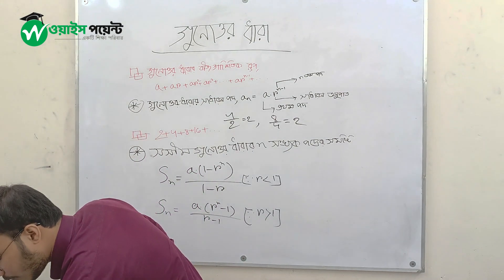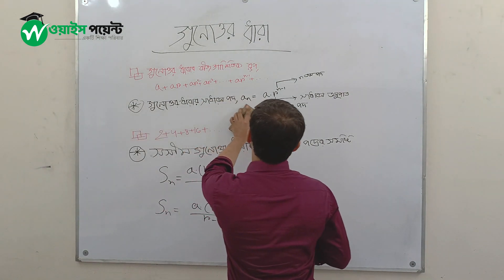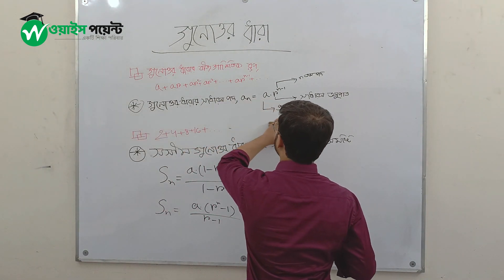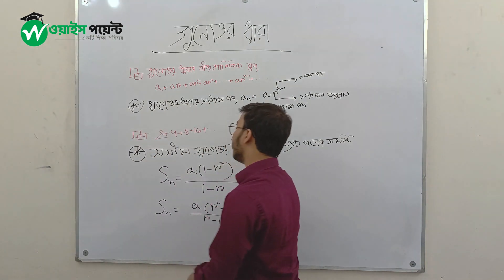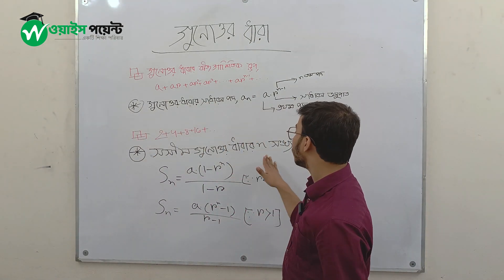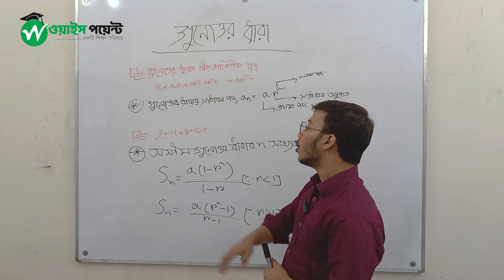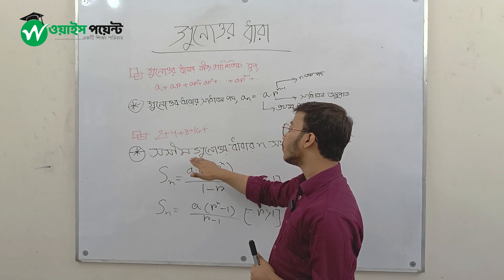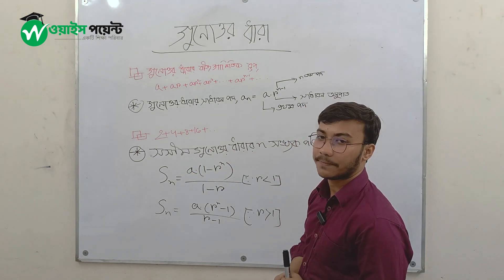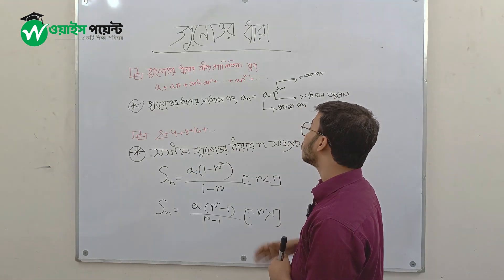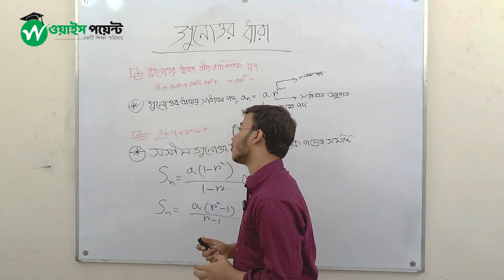Now, we have a new formula for the sum of a geometric progression — the sum of n terms of a geometric series.